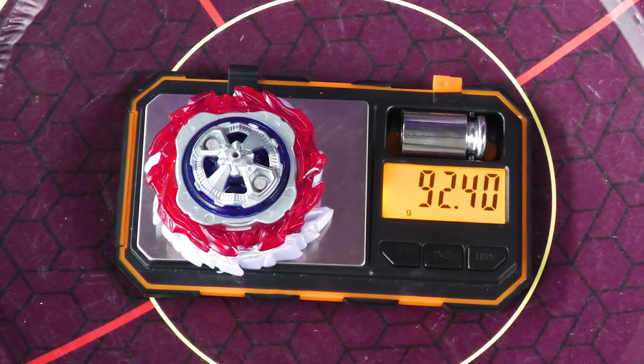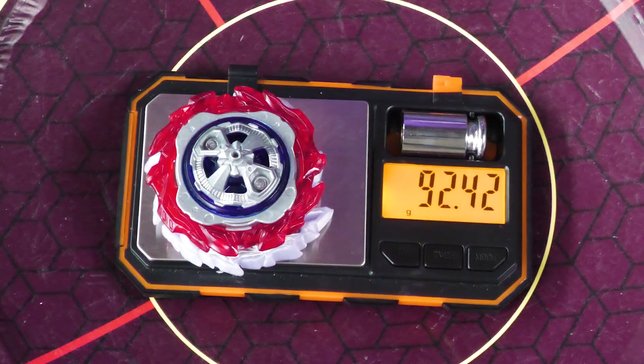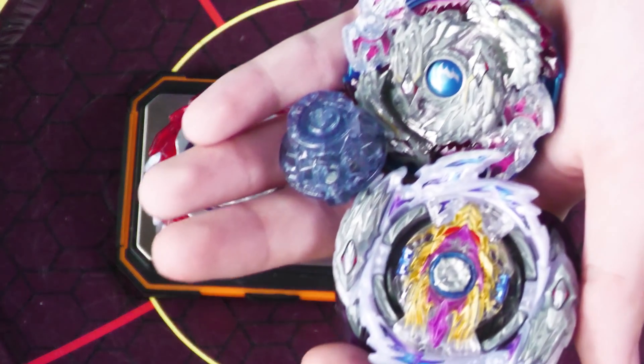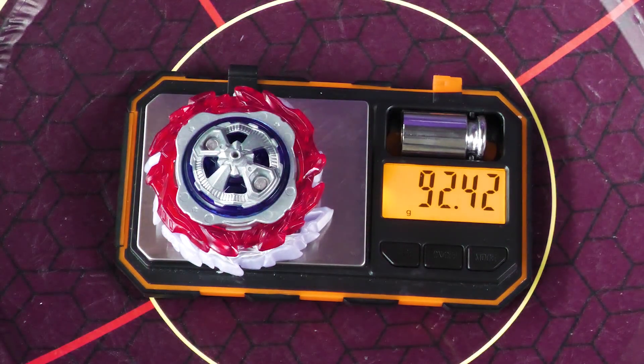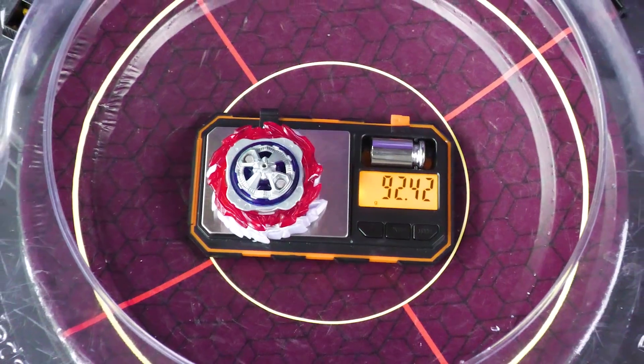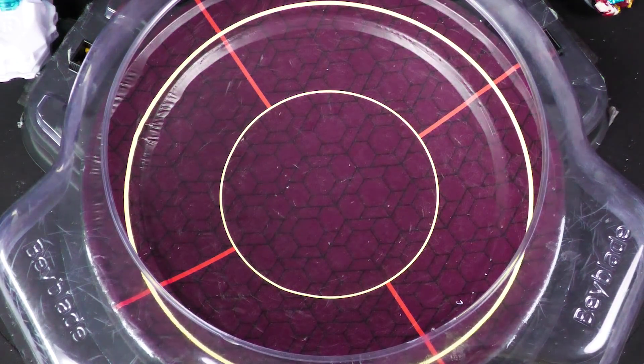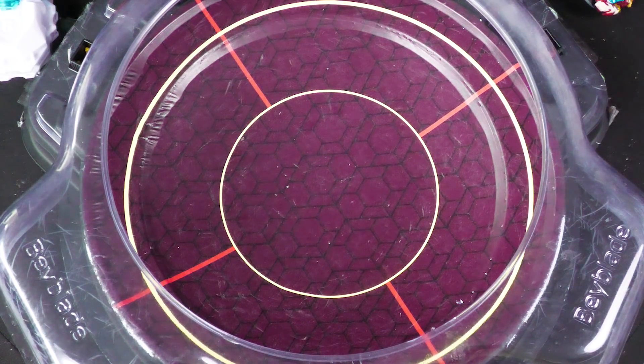So before we actually continue, you can leave a request in the comments where you either get Dual Mugen with Guilty and Savior, or you get Metal Destroy on either Rage or Nightmare Longinus. You decide and vote. But yeah, that's the video. So the reason why I wanted to do it in this one and not the DB Stadium is that I've done a lot of videos on the DB Stadium. So I want to do a few in the standard.